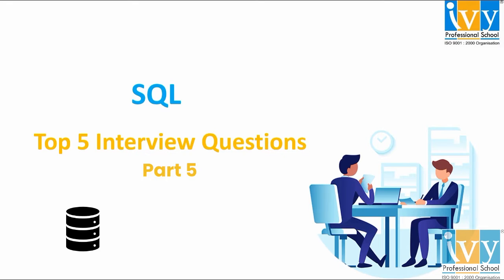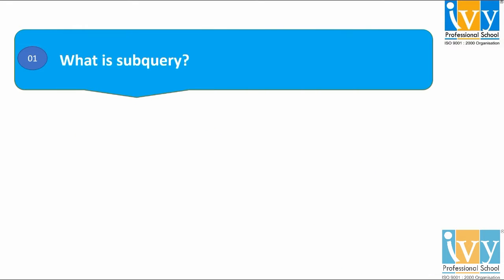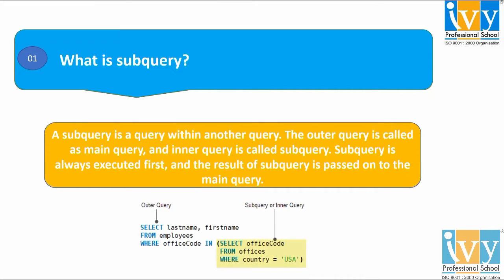Let's move on to the first question: what is a subquery? A subquery is a query within another query. The outer query is called the main query and the inner query is called a subquery. The subquery is always executed first and the result is passed on to the main query. Therefore, we can also say that a subquery is called a nested query.